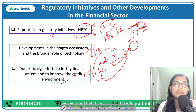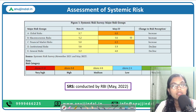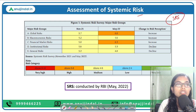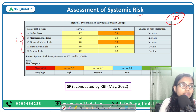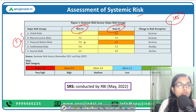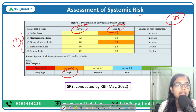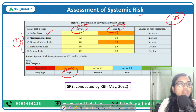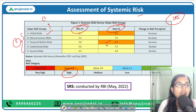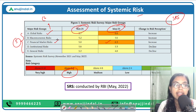Lastly, we will talk about the Systemic Risk Survey, or SRS. This survey categorizes risk into five groups. Based on the last survey and the present survey, we can see that there has been an increase — we have moved to the high risk category in the case of global risk. The reasons are obvious: the geopolitical tensions, the ongoing Russia-Ukraine war, disruptions in supply chains, etc. We can also see a high risk category in the financial market risk.